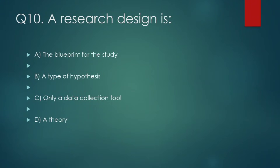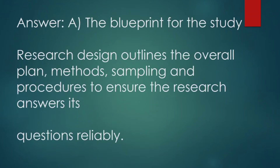A research design is: (A) the blueprint for the study, (B) a type of hypothesis, (C) only a data collection tool, (D) a theory. Correct answer: option A — the blueprint for the study. Research design outlines the overall plan, methods, sampling, and procedures to ensure the research answers its question reliably.